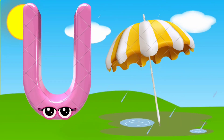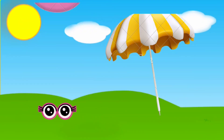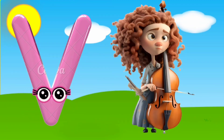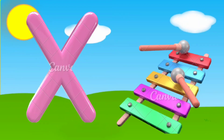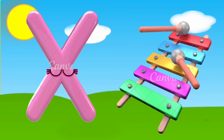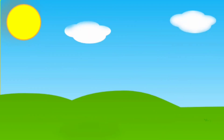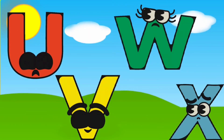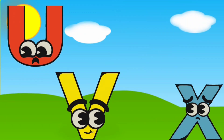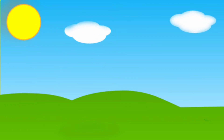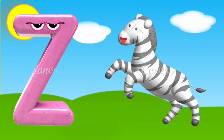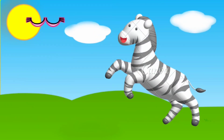U is for umbrella, U, U, umbrella. V is for violin, V, V, violin. W is for watch, W, W, watch. X is for xylophone, Z, Z, xylophone. Y is for yellow, ye, ye, yellow. Z is for zebra, Z, Z, zebra.